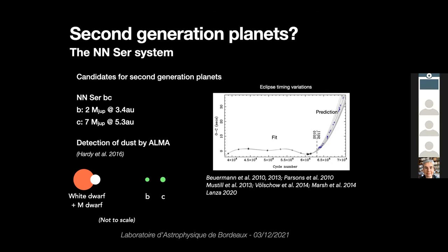One detection of such planets was done around the Enhancer system. The Enhancer is a binary eclipsing binary system with a white dwarf and an M dwarf. You can monitor the time of the eclipses with different orbits and see that the timing of the eclipses changes with the orbit. The change is very small — on the order of a second — but it is detectable. So you can monitor these eclipse timing variations.